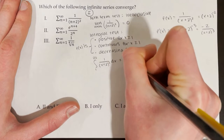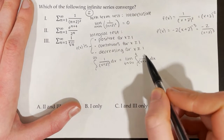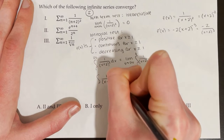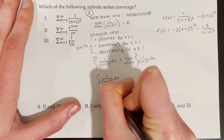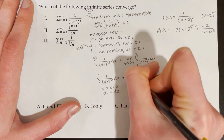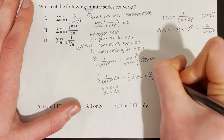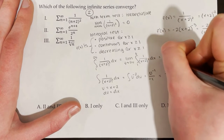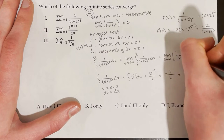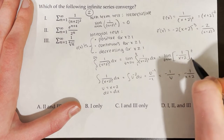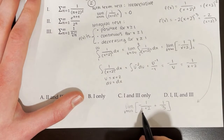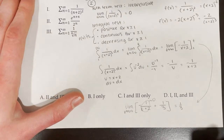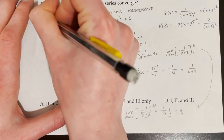Using u-substitution with u equals x plus 2, so du equals dx, the integral becomes the integral of u to the negative 2 du, which equals negative 1 over u, or negative 1 over (x plus 2). Evaluating from 1 to infinity: as t approaches infinity, negative 1 over (t plus 2) approaches 0, and plugging in 1 gives positive 1 third. So the integral equals 1 third and converges. Therefore, the series also converges.